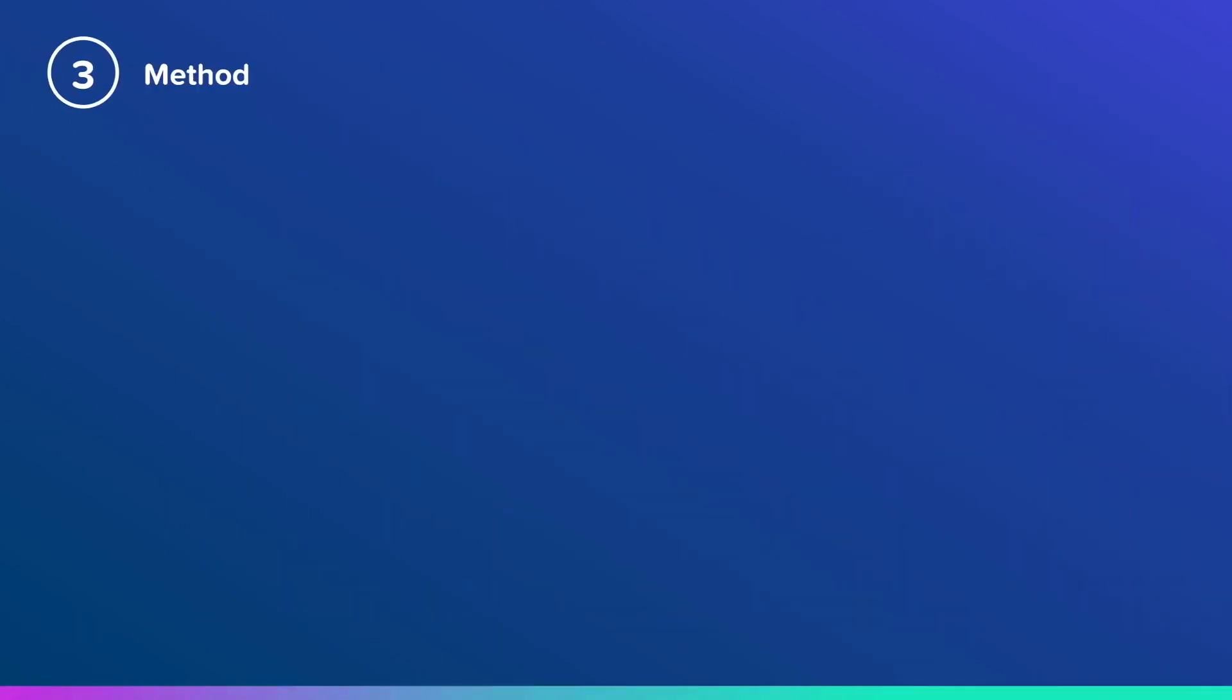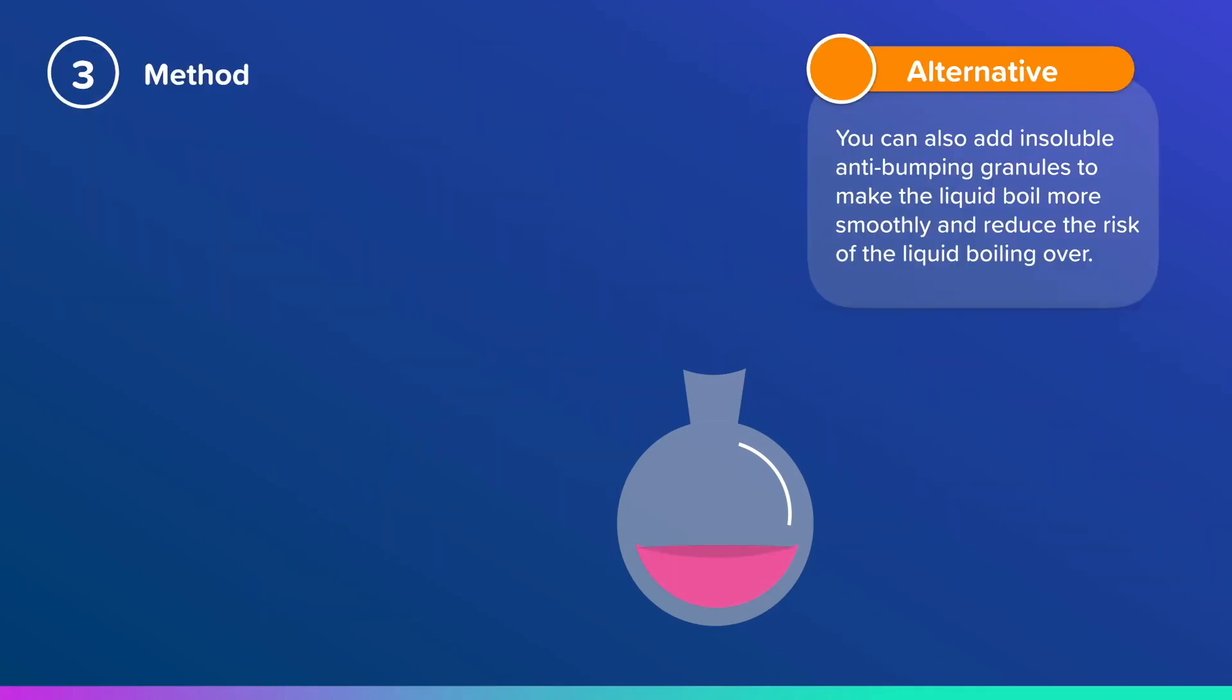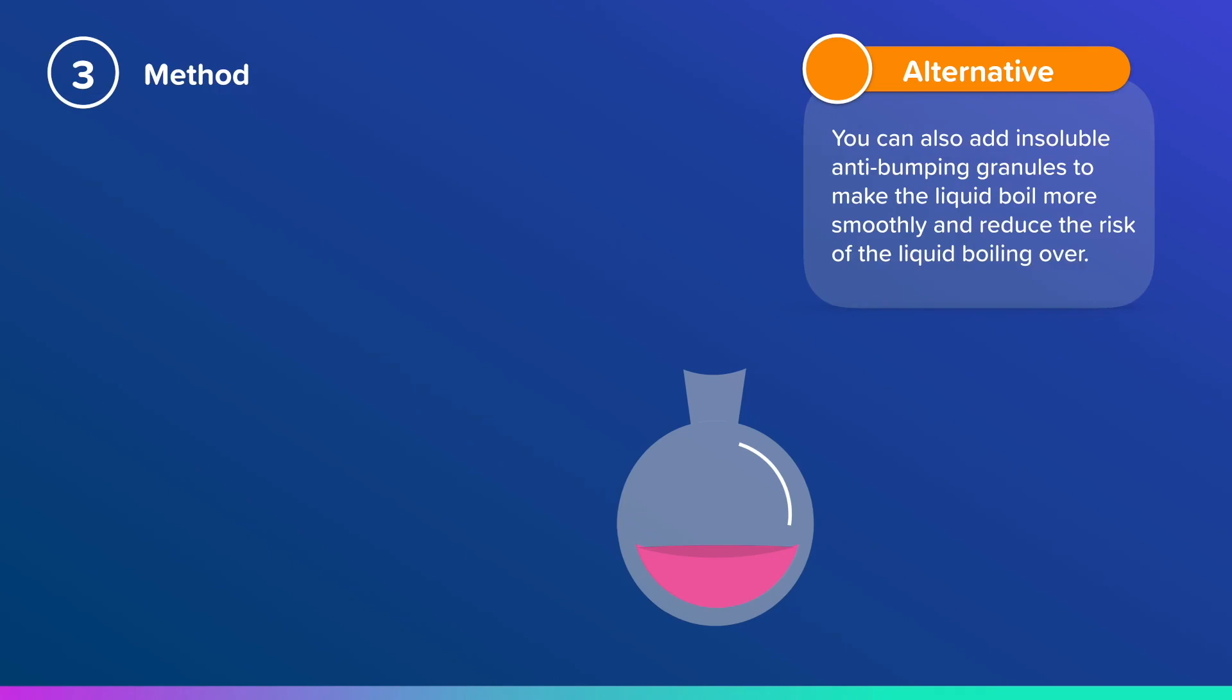First, add the liquid you're going to distill to your round-bottomed flask. You can also add insoluble anti-bumping granules to make the liquid boil more smoothly and reduce the risk of the liquid boiling over, but it's optional.